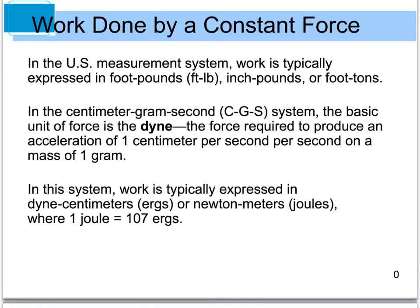In the US, typical units of work are foot-pounds, inch-pounds, or foot-tons. In the centimeter-gram-second system, the typical unit is a dyne. Most applications will deal with either foot-pounds or newton-meters, and a newton-meter equals a joule. You'll also sometimes see ergs, which are related to joules as well.